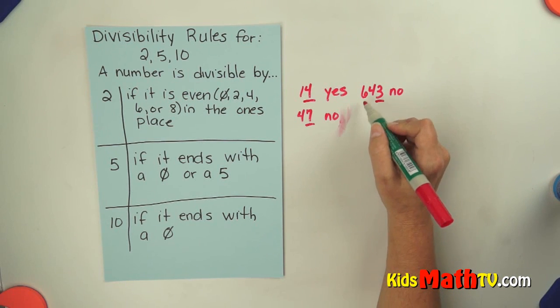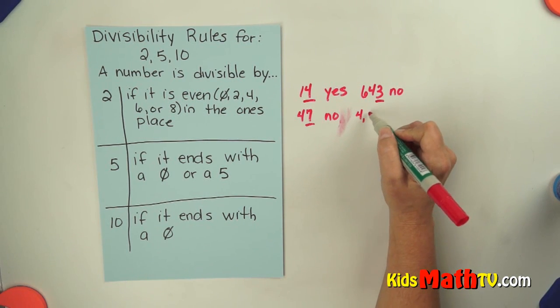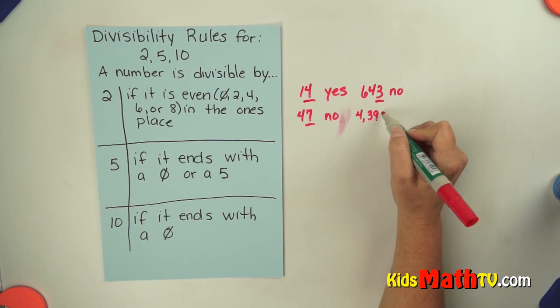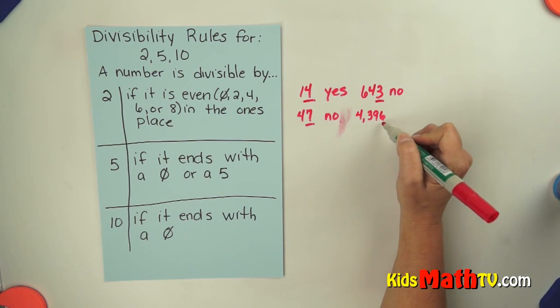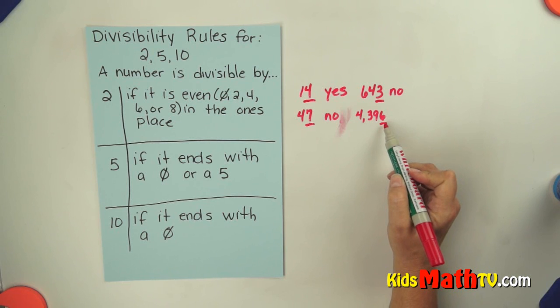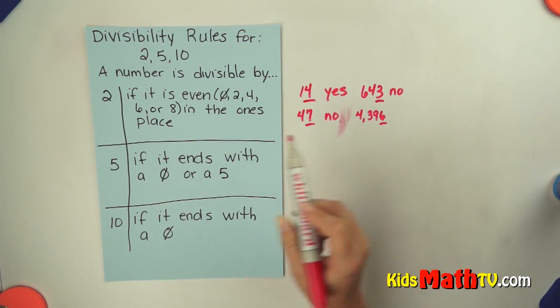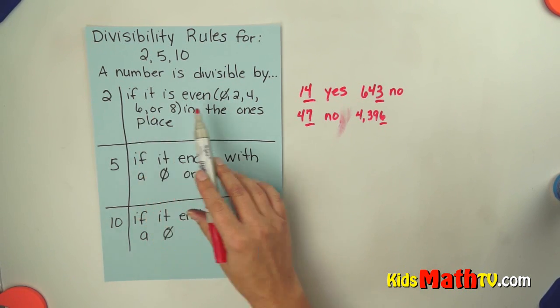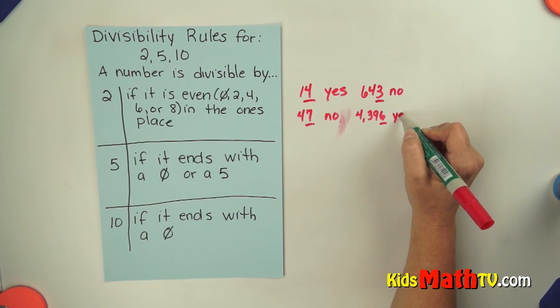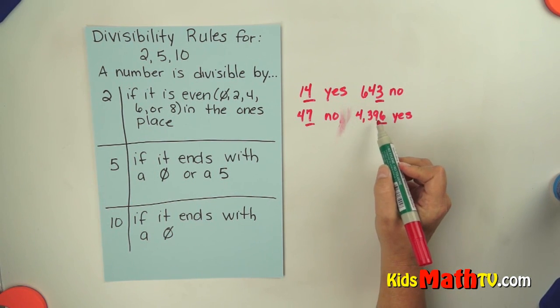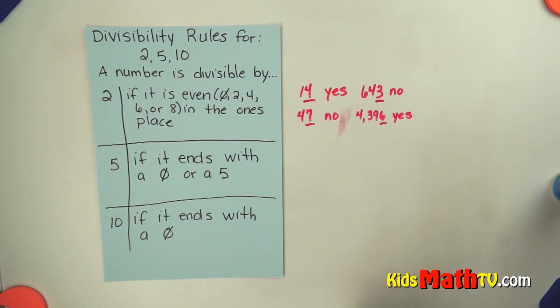One more. We'll go big. How about 4,396? All I have to do is look at the ones place. That is a 6. 6 is an even number. It's on our list, so yes, I can divide 4,396 by 2 evenly.